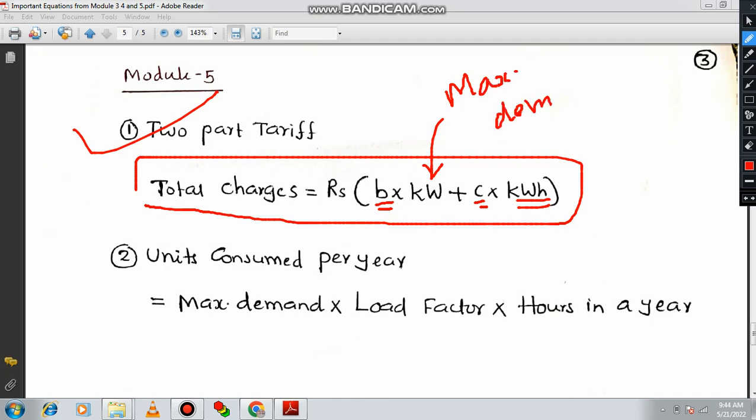KW means kilowatts. And what is kilowatt hour? It is actually units. Number of units consumed. Number of units. Energy, number of units. Units means energy. What is this? C means the cost per units. Where B is the cost per maximum demand or cost per kilowatts. This is required whenever you are solving some numerical example. At that time, this formula is required. Then I ask you to compute what is the total cost, what is the total tariff concerning for a particular building or a particular area. At that time, you can recall this formula.